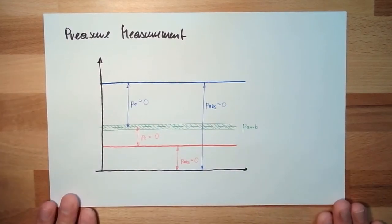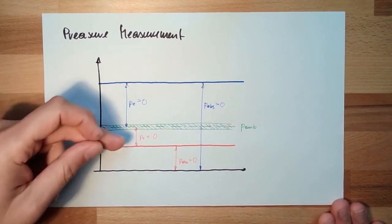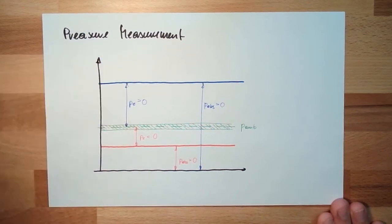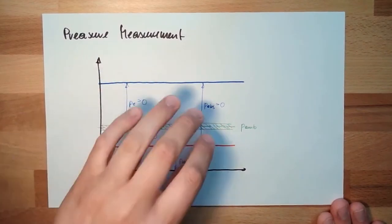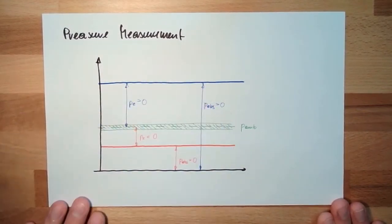There are pressure measurement devices which measure the excessive pressure, but there are also devices which measure the absolute pressure.